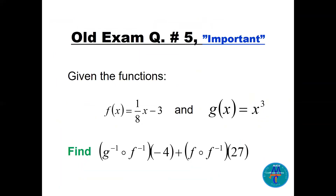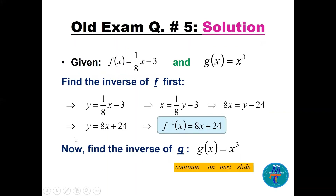Question number five: given two functions f(x) and g(x), find g⁻¹∘f⁻¹(−4) + f∘f⁻¹(27). Notice the difference: f∘f⁻¹ involves the same function so we can use cancellation properties — f∘f⁻¹(27) = 27. For g⁻¹∘f⁻¹(−4), there is no cancellation; we must find f⁻¹ and g⁻¹ separately and then replace −4 in f⁻¹.